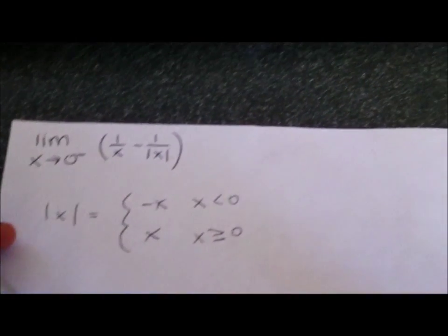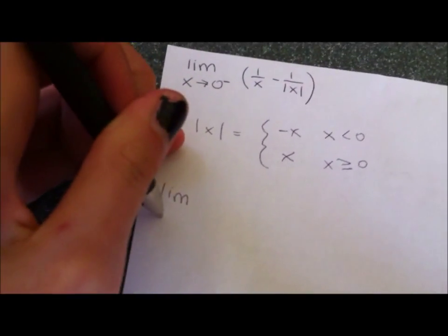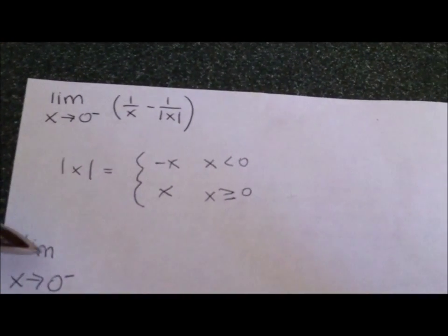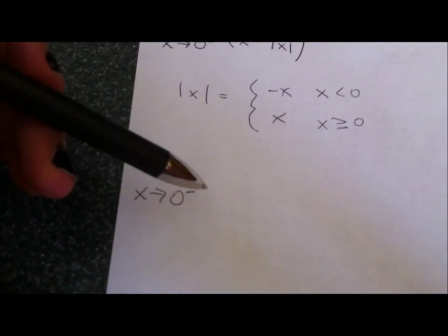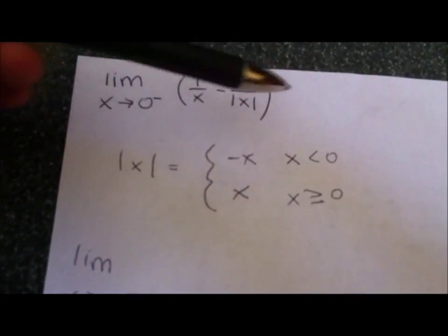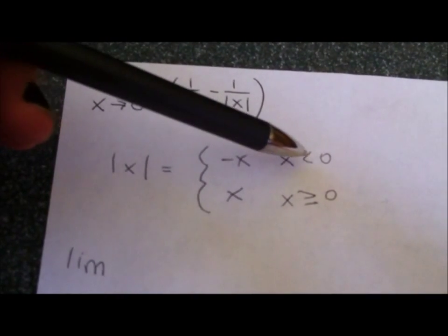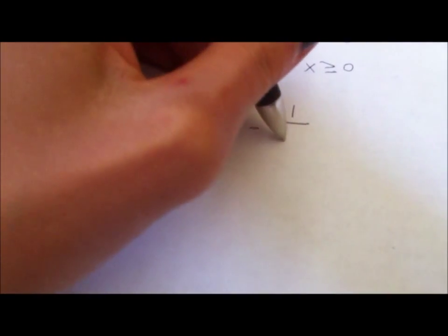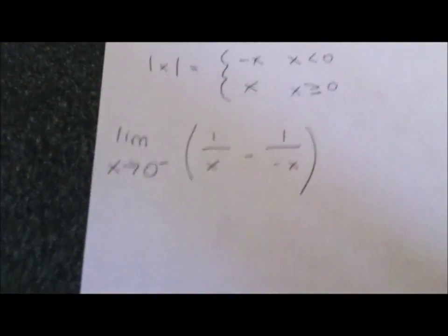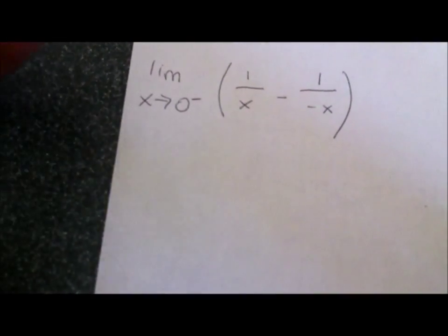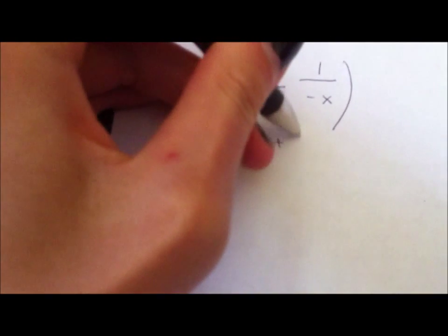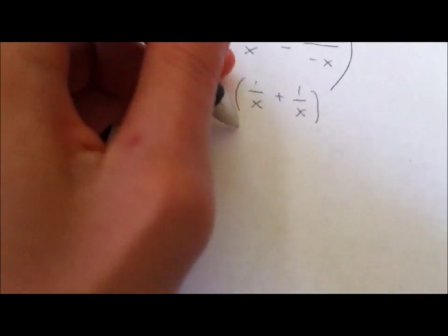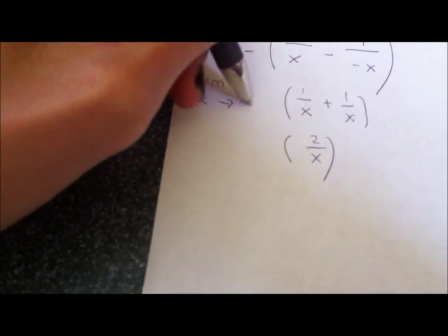So now we can look at our limit here. We have limit as x approaches 0 from the left. So since we're only focused on from the left, we can just look at our piecewise function for what we have for the left, which is when x is less than 0, negative x. So when we rewrite our function here, we can just have negative x. Now you notice that that's two negatives, so we basically end up with 1 over x plus 1 over x, which becomes 2 over x, the limit as x approaches 0 from the left.